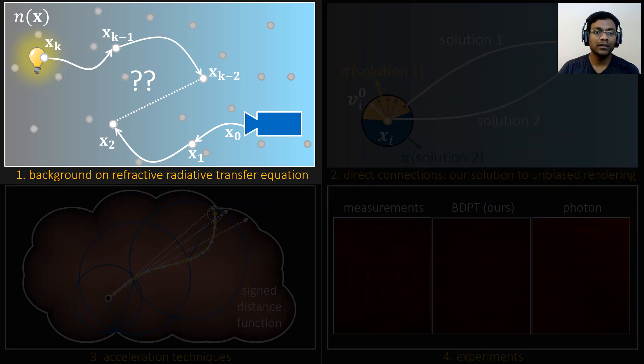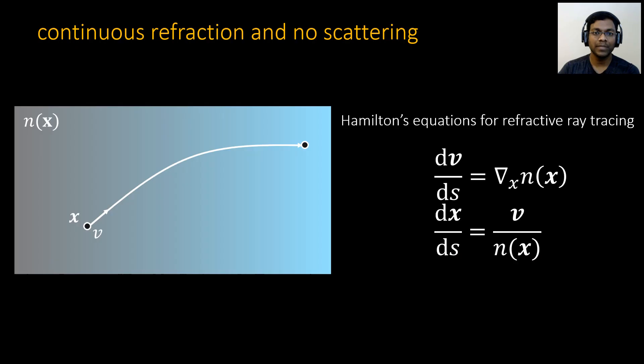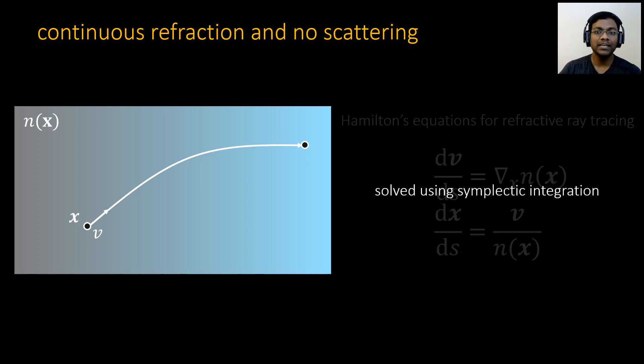Let's first look at the background on the refractive radiative transfer. Let's begin with the case of a medium where there is only continuous refraction and no scattering. As I mentioned earlier, light travels along curved paths inside such a medium. Given an initial point and direction, we can trace such a curved path using Hamilton's equations. I won't go into the details, but the important point here is that we can select a suitable step size and then use simple tick integration to produce a piecewise linear approximation to the path.